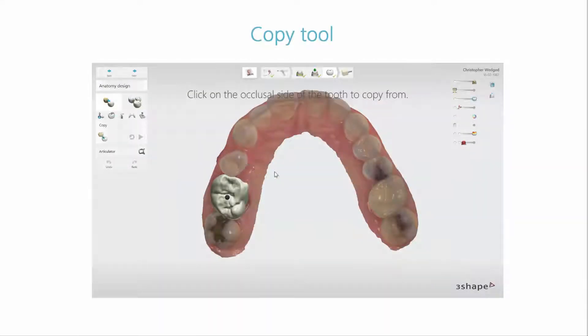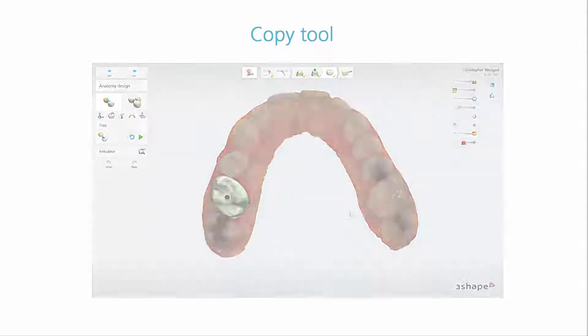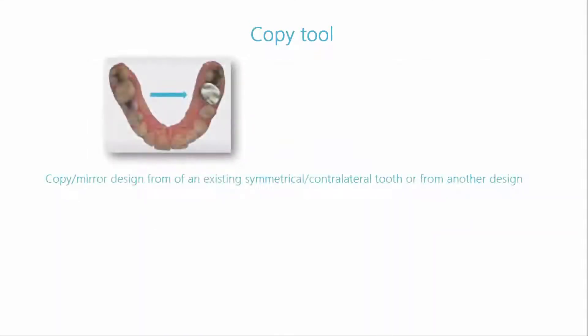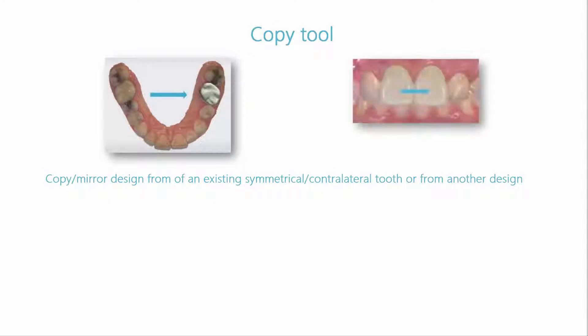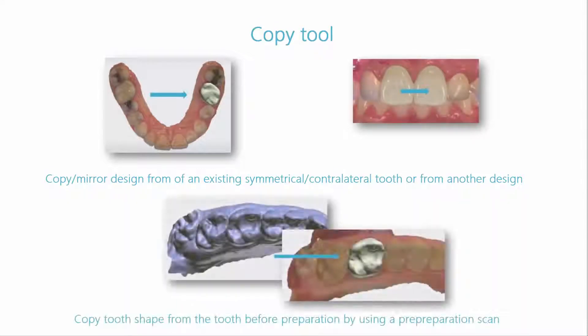The copy tool option can be found in the anatomy design step. This tool allows you to copy the anatomy of an existing symmetrical or contralateral tooth or anatomy of another design. You can also copy a tooth from a pre-preparation scan.